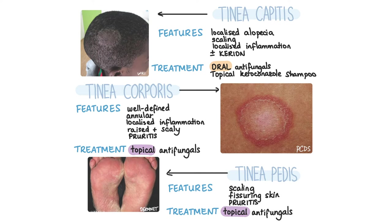Tinea corporis, or ringworm, is a fungal skin infection that usually affects the trunk, legs or arms. On examination you'll see a well-defined annular erythematous lesion with pustules and papules associated with a raised scaly border, and patients usually complain of pruritus. Ringworm may be treated with topical antifungals or oral fluconazole. Tinea pedis is the term for fungal infection of the feet, also known as athlete's foot. It is characterized by pruritic, scaling and fissuring skin between the toes which spreads to the sole and dorsal aspect of the foot. Topical antifungals are used as management, although oral antifungals can be given as second-line treatment.